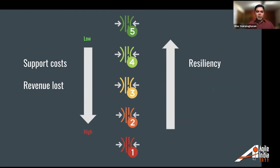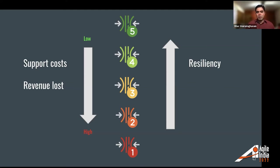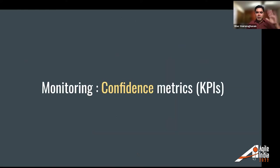Support costs are lowest at level five. With good fallbacks, automated failover, and regular practice, less than one engineer per week is needed and on-call engineers aren't being woken up constantly. At level one, you might need two or three engineers every week just to keep the system up. Similarly, revenue lost is least at level five and highest at level one — which is why the scale goes from red to green. The level of resiliency clearly increases as you go from level one to five. The third requirement is monitoring — we always need KPIs to tell us if we're doing this right.